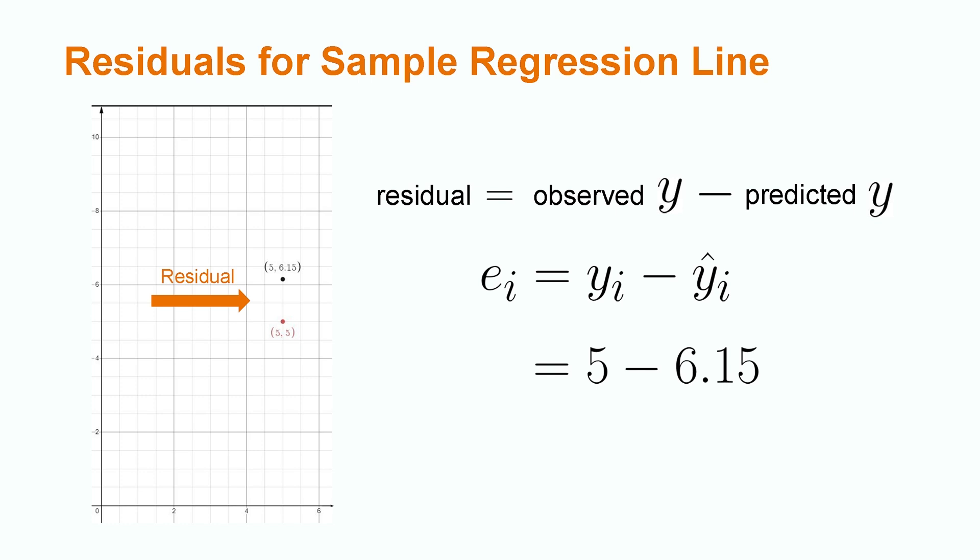This would mean that we have a residual of negative 1.15. Note that the residual is the vertical distance between the actual data point and the predicted data point.